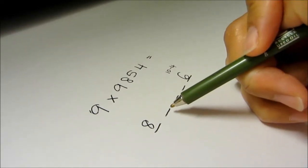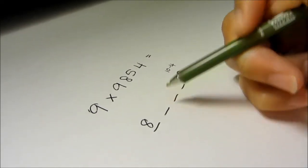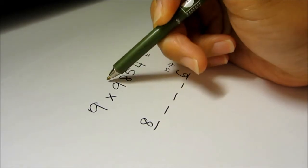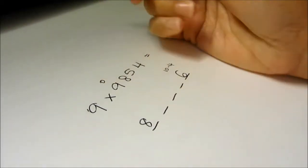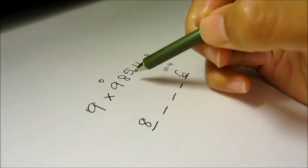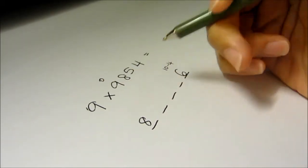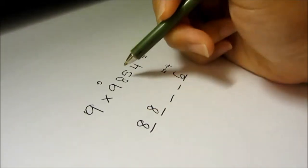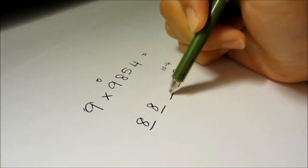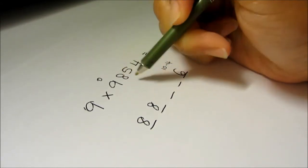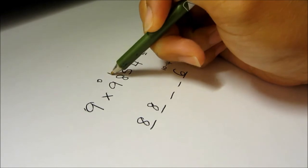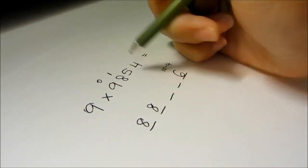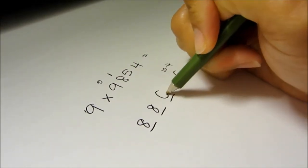To figure out the second digit, what I did was use 9 minus the first digit here. So 9 minus 9 is 0. So the second digit will be 8 plus 0, so it's 8. The same concept applies for the third digit — 9 minus 8 is 1, so the third digit will be 5 plus 1, which is 6.